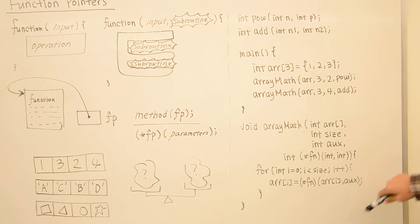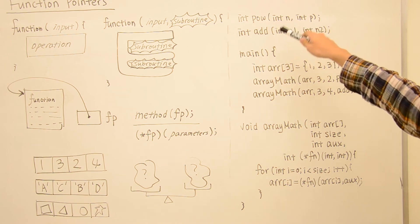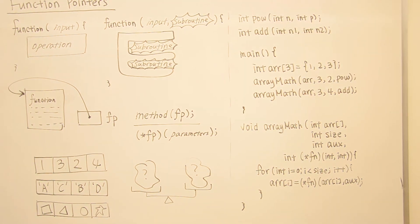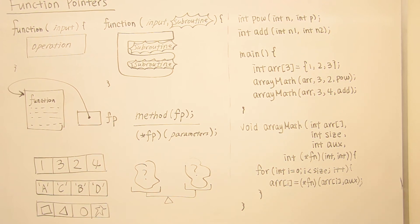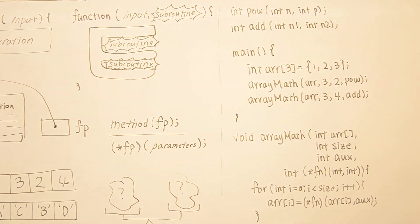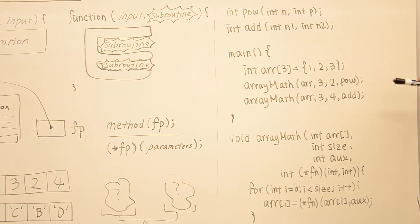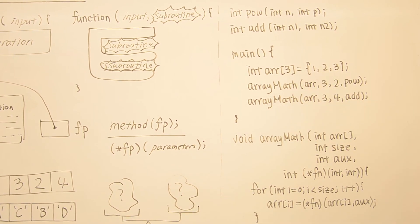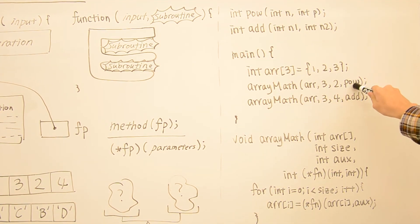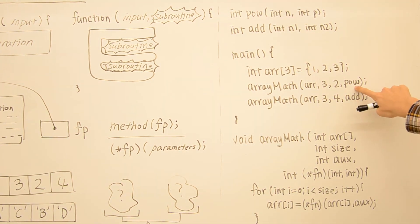So if we have something like this, we can do something very interesting. Let's say we have two methods, pow and add. pow just takes in two numbers n and p and returns n to the power of p, and add just simply adds these two numbers and returns the sum. So here in the main method, we have an array 1, 2, 3, and we call this method passing in the function pointer. So this pow is actually a pointer to the method declaration of that one.